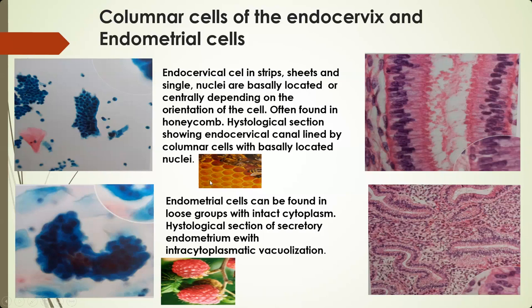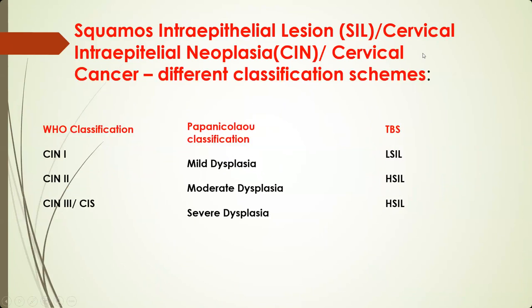Sometimes in everyday practice it is easier if we compare with some everyday structures. Columnar endocervical cells are very similar to a honeycomb, and endometrial cells are very similar to a raspberry. Here is a scheme comparing different classifications of squamous intraepithelial lesions — the WHO classification, the Papanicolaou classification, and the Bethesda system classification. All these classifications are used in everyday practice worldwide.